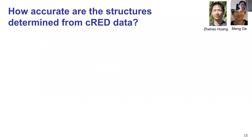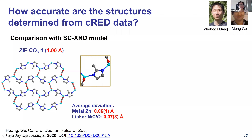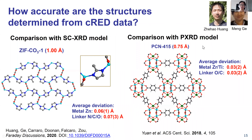We also compared the structure obtained from electron diffraction data with X-ray diffraction data. The superimposed models from electron diffraction and single crystal X-ray diffraction show hardly any difference. The average deviation for metals is 0.06 Å and for linkers 0.07 Å. We also compared with X-ray powder diffraction models, and the accuracy depends mainly on the resolution of the data rather than the technique being used.